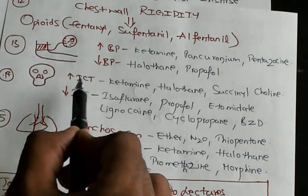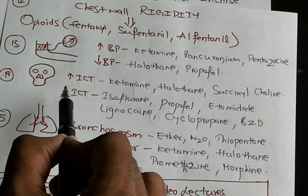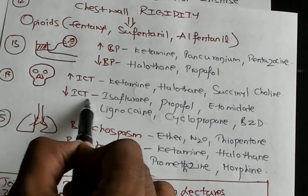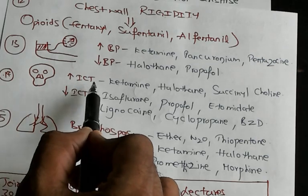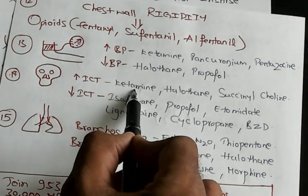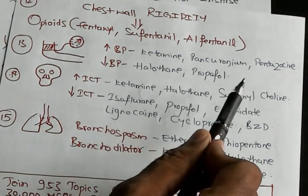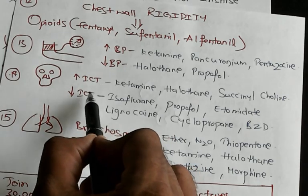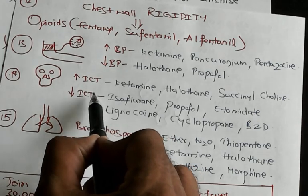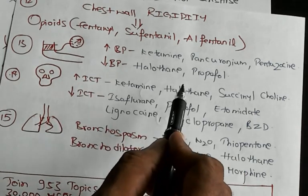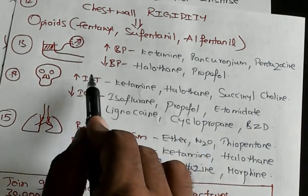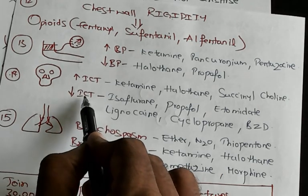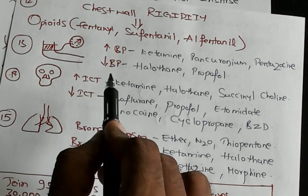Increased intracranial tension versus decreased intracranial tension — if you don't remember this, you'll have tension in the exam. Ketamine, halothane, and succinylcholine lead to increased ICT. Remember either the increased ICT list or the decreased ICT list — but ideally remember both.